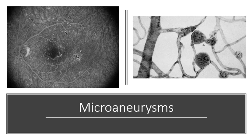Microaneurysms are localised out-pouchings of the capillary wall, where the capillary wall spreads out and in a certain area it thickens up and moves in an outward direction. These microaneurysms can leak plasma into the retina because the blood-retinal barrier is broken down or thrombosed. In the image on the right, you can see these little out-pouchings of microaneurysms coming out of tiny little blood vessels.